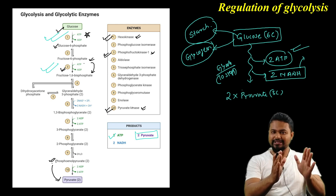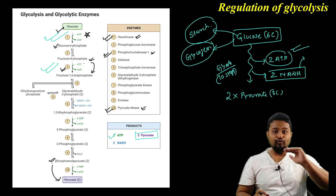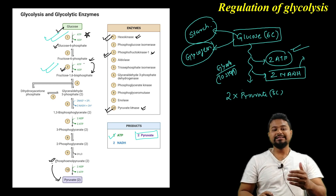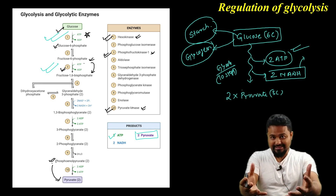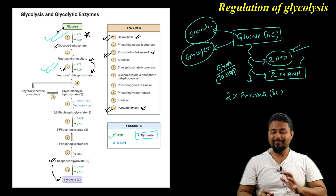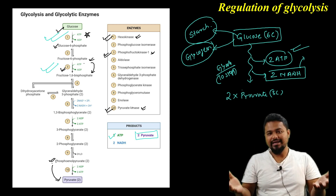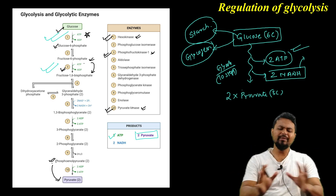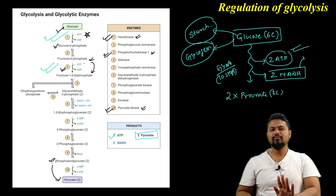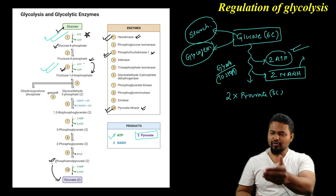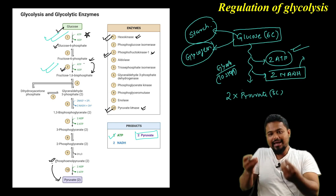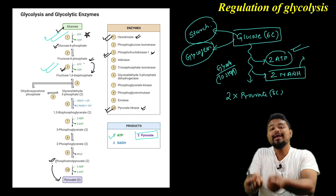The important concept to keep in mind is feedback regulation. What does it mean? Feedback regulation means that when the product accumulates, it controls the reaction. Like a seller's product — if a product is already present in excess, additional production stops the reaction. When the product amount increases, the reaction will stop.